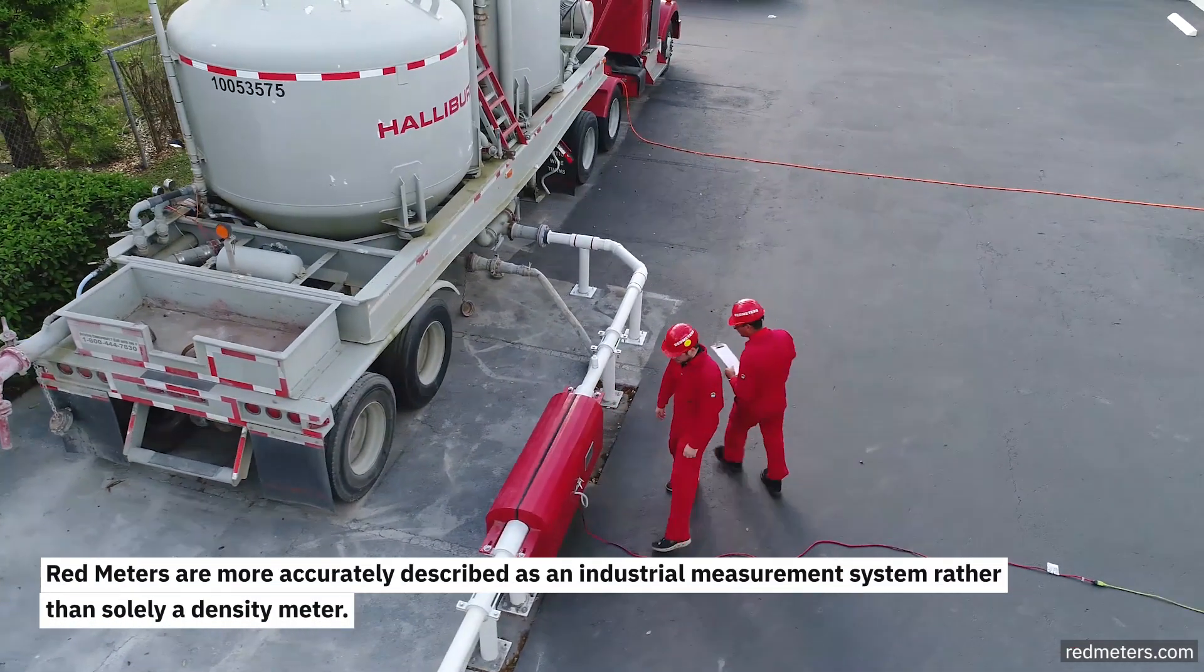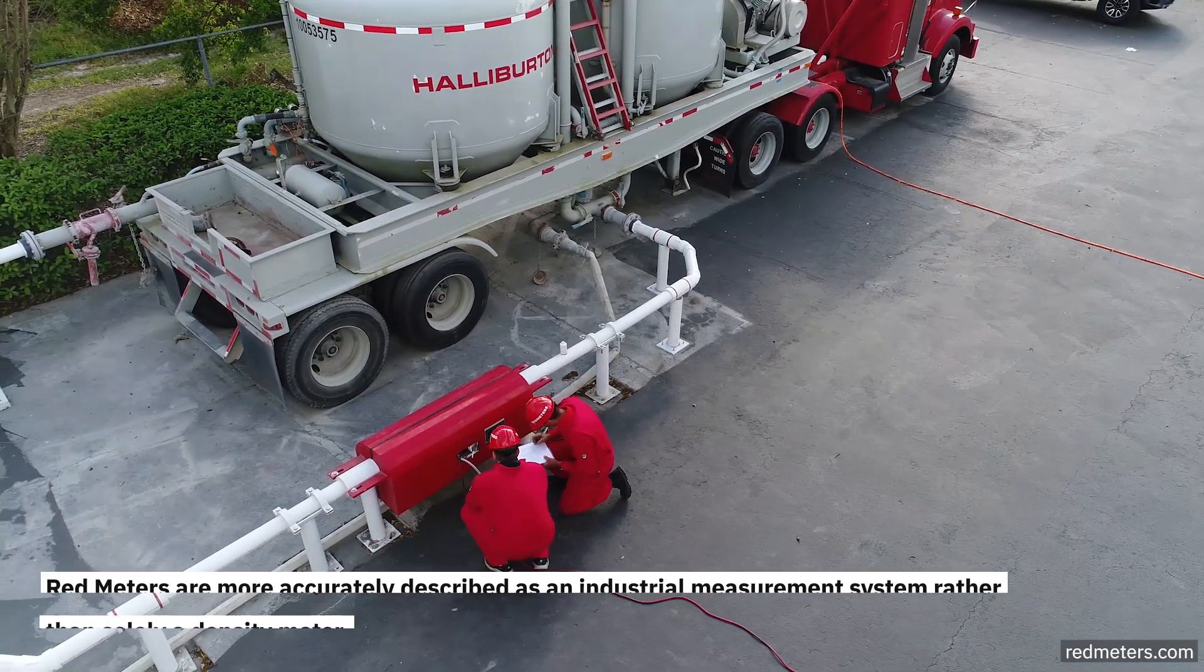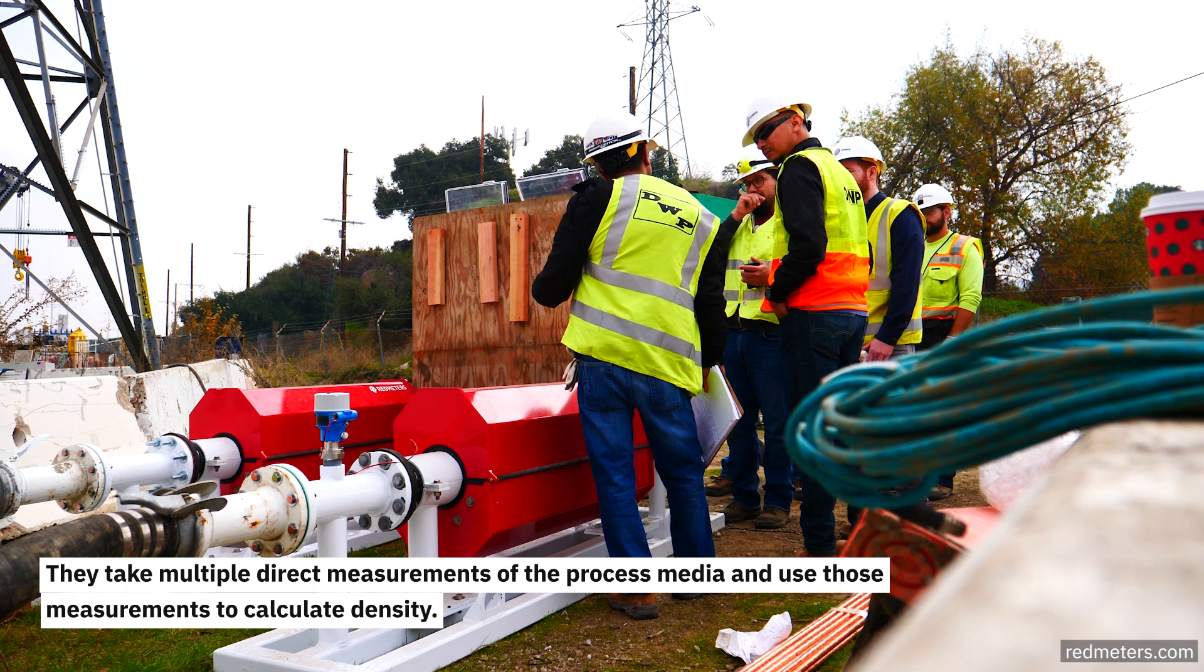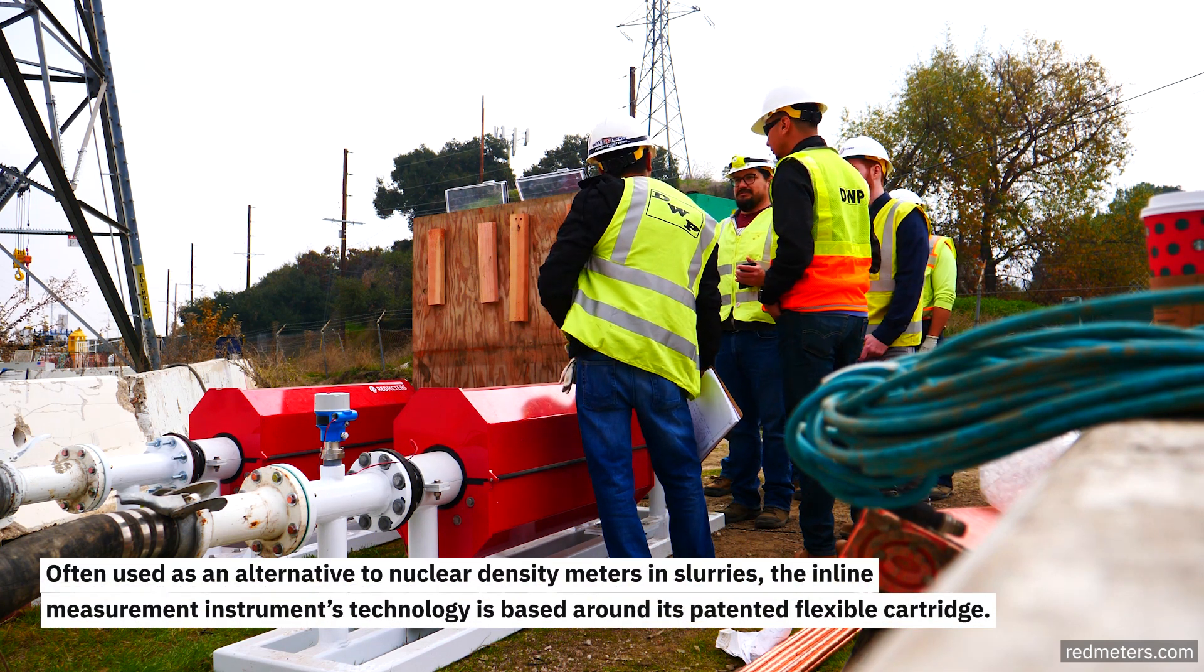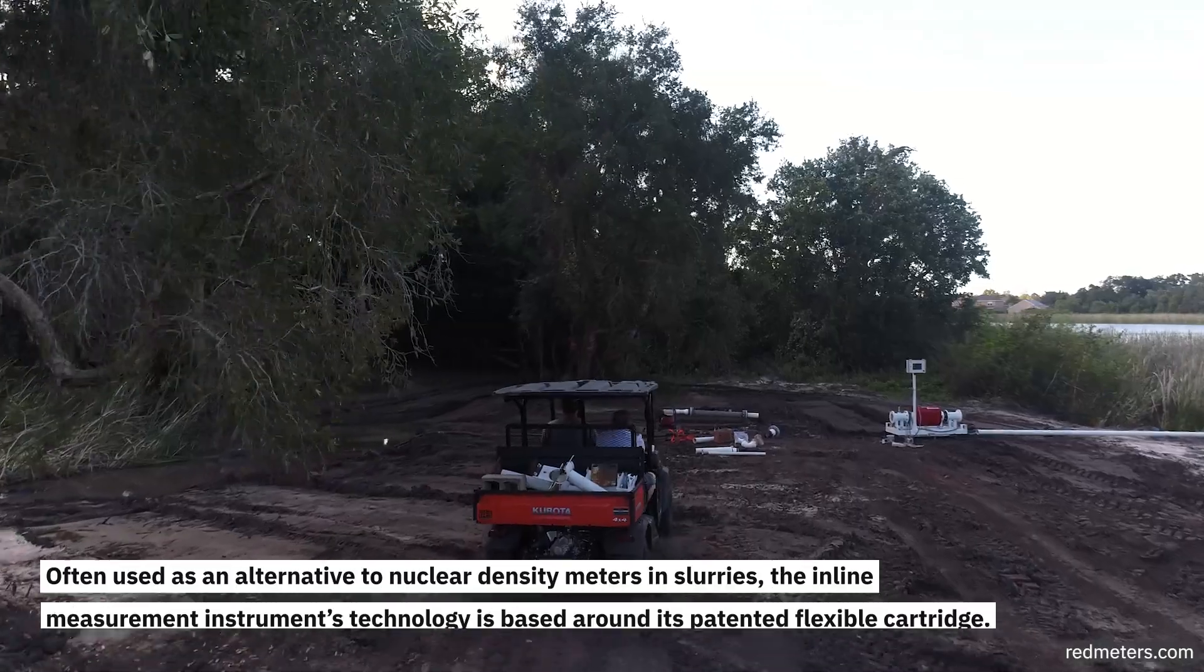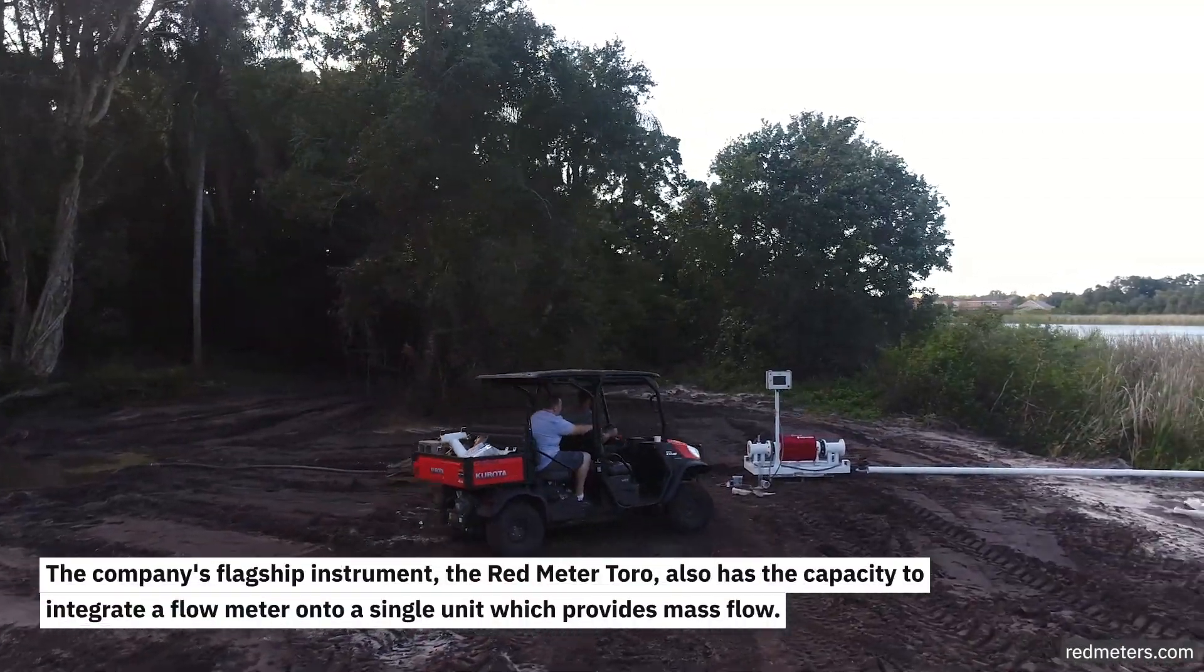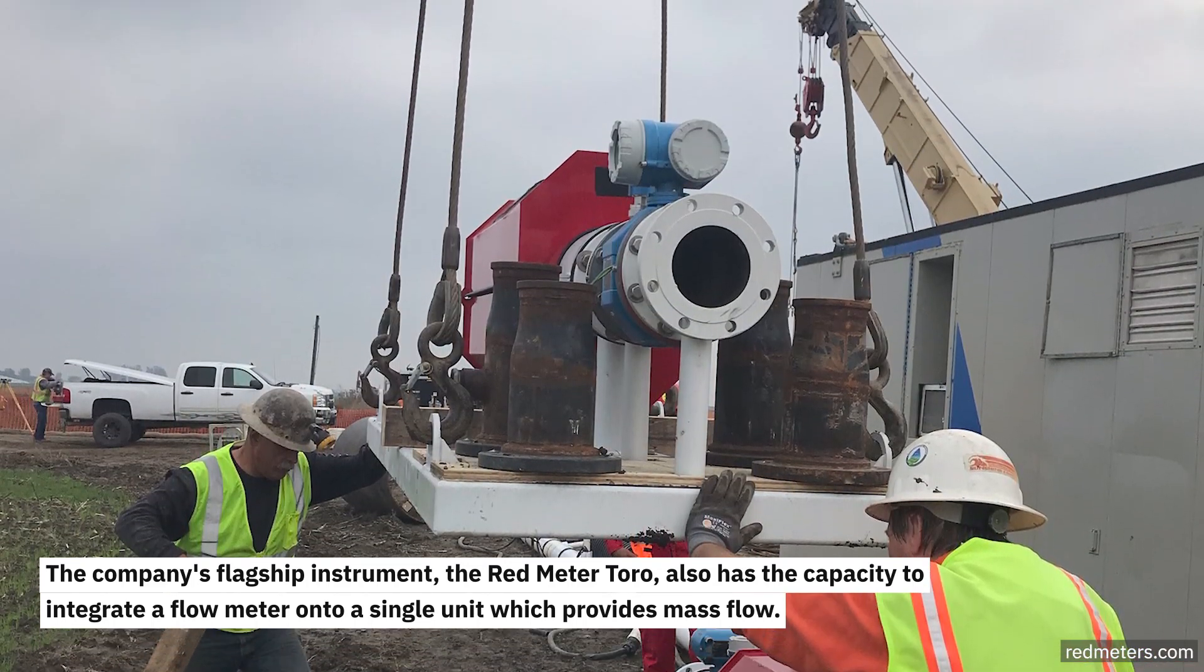Red meters are more accurately described as an industrial measurement system rather than solely a density meter. They take multiple direct measurements of the process media and use those measurements to calculate density. Often used as an alternative to nuclear density meters in slurries, the inline measurement technology is based around its patented flexible cartridge. The company's flagship instrument, the Red Meter Toro, also has the capacity to integrate a flow meter onto a single unit, which provides mass flow.